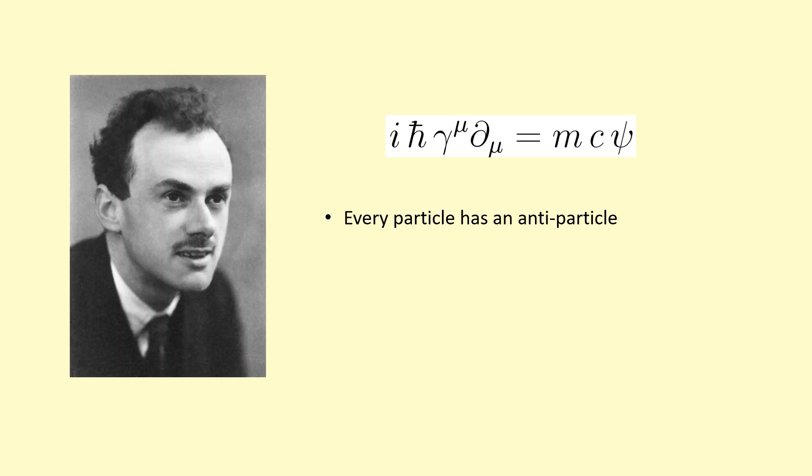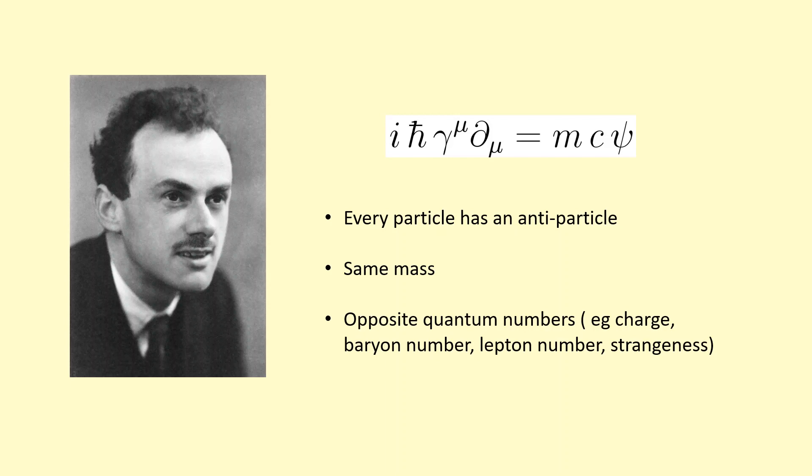What he said was that for every particle, there's an antiparticle which has the same mass but the opposite quantum numbers. For example, it would have the opposite charge. So if a particle is positive, the antiparticle would be negative. And it also has the opposite baryon number, lepton number, strangeness, and we'll come on to that later.